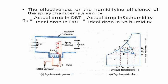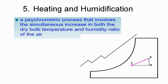The effectiveness or humidifying efficiency of the spray chamber is given by the ratio of actual drop in temperature to ideal drop in temperature, and also equals the ratio of actual drop in specific humidity to ideal drop in specific humidity. This is how we calculate the humidifying efficiency or effectiveness of a coil.